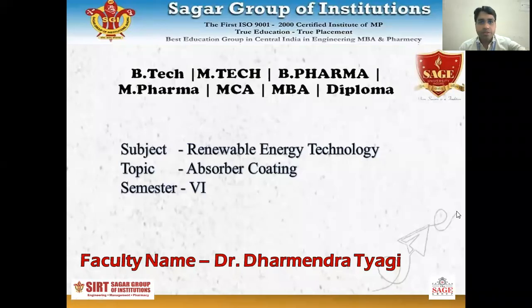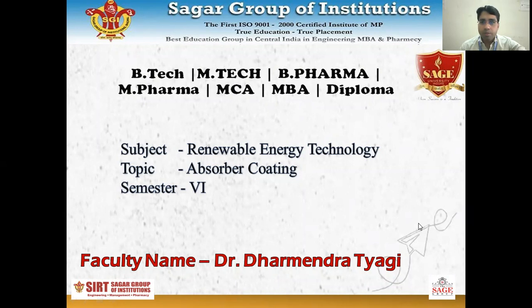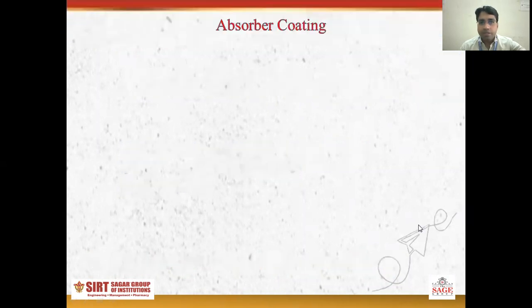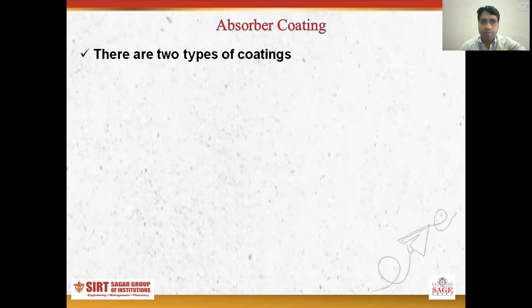Hello, my dear students. Today, we are going to discuss about the absorber coating. Now there are two types of absorber coating: the first one is the selective type absorber coating and the second one is the non-selective type coating.